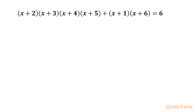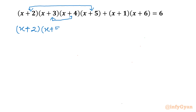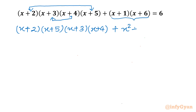Let's get started by considering one manipulation step. I will consider these two terms together and these two terms together, then take the product. So let me write: (x+2)(x+5) times (x+3)(x+4), and for the second bracket, the product becomes x² + 6x + x + 6, equal to 6.